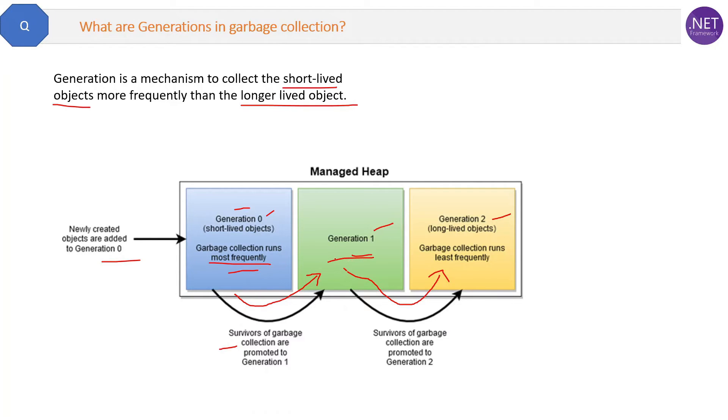The chances of an object being disposed in Generation 1 are less than Generation 0, and the same goes with Generation 2. So in this way, the garbage collector manages with the help of generations which objects have to be disposed right now or which objects have to be disposed after some time. That is what generations are.